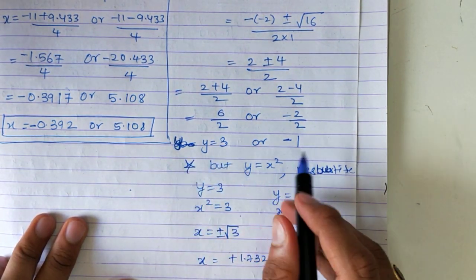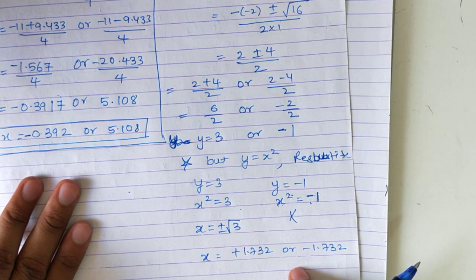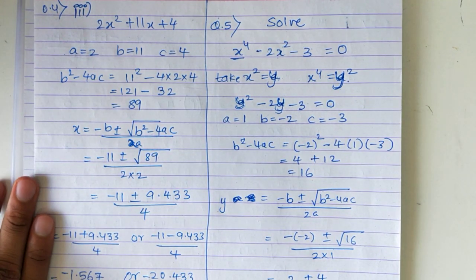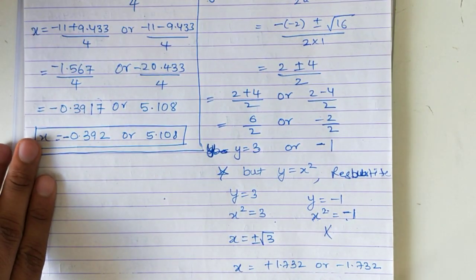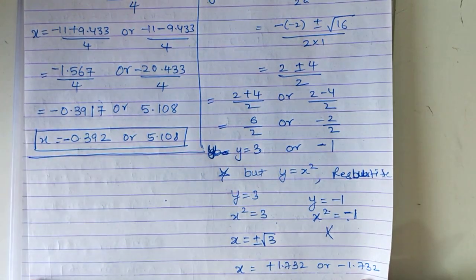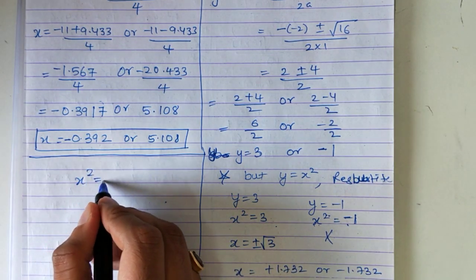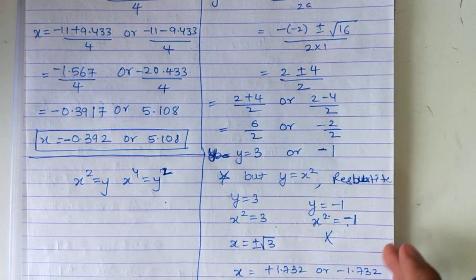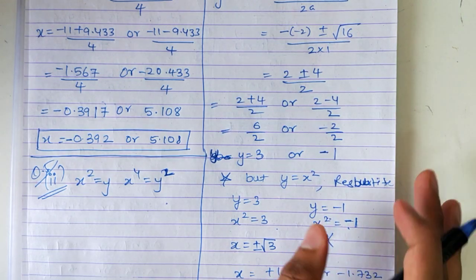Don't forget to do this resubstitution part — if you just leave y and don't substitute back, x won't get its value. The resubstitution is very important. Similarly in the next question, take x squared as y, x to the power 4 as y squared, substitute the values and you will get the answer for the second question too.